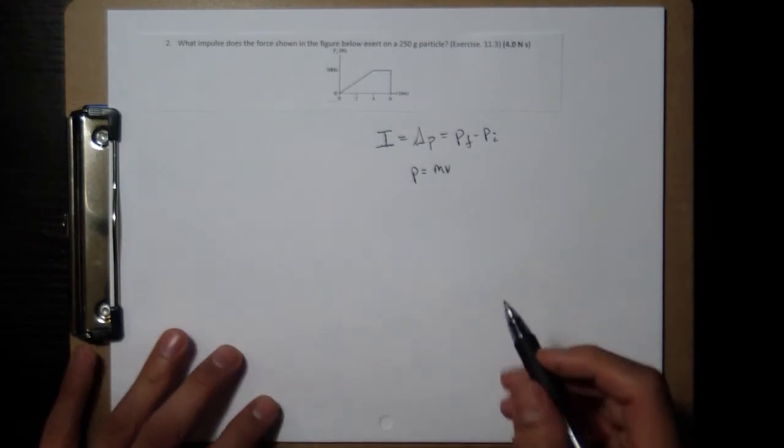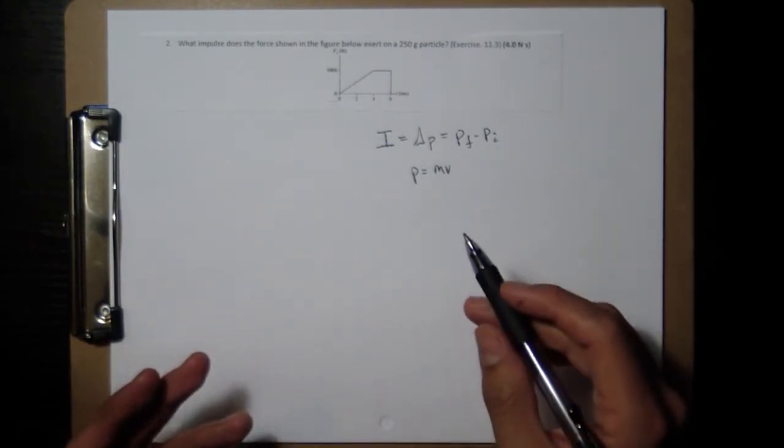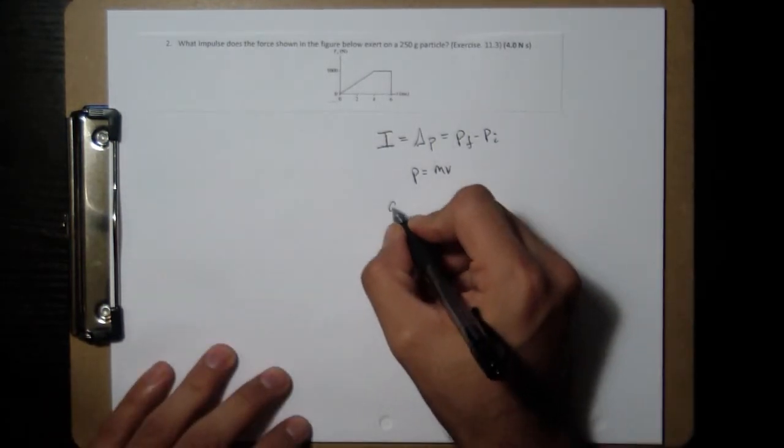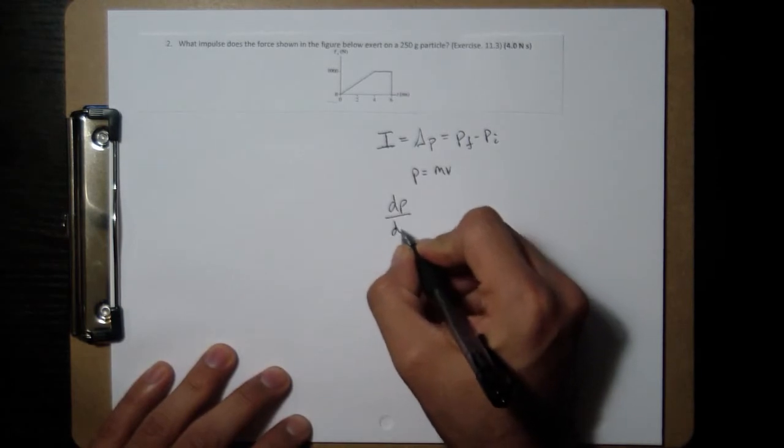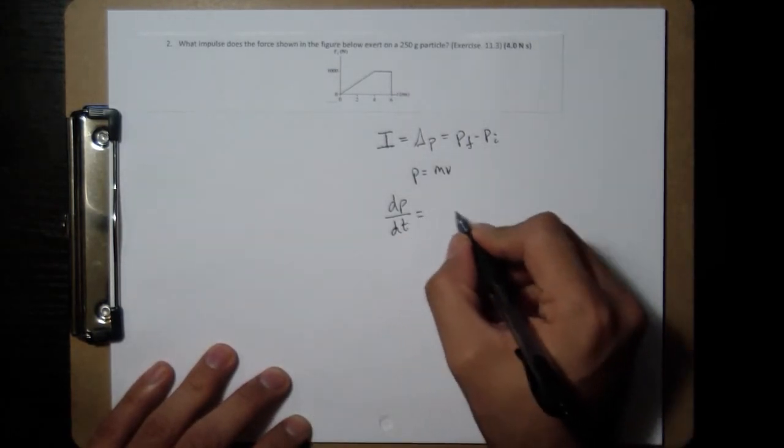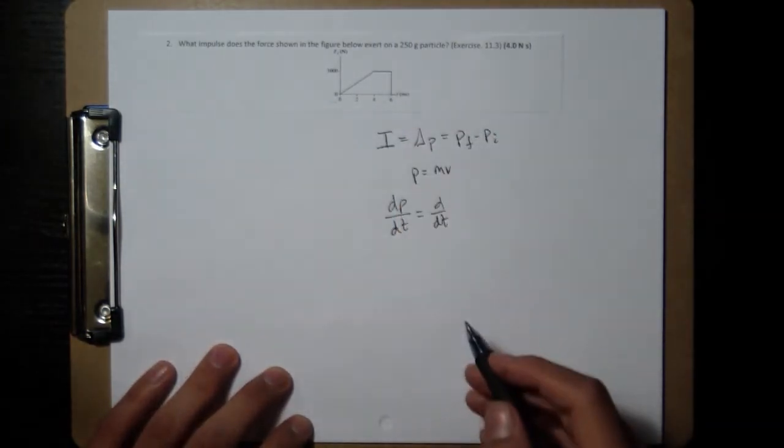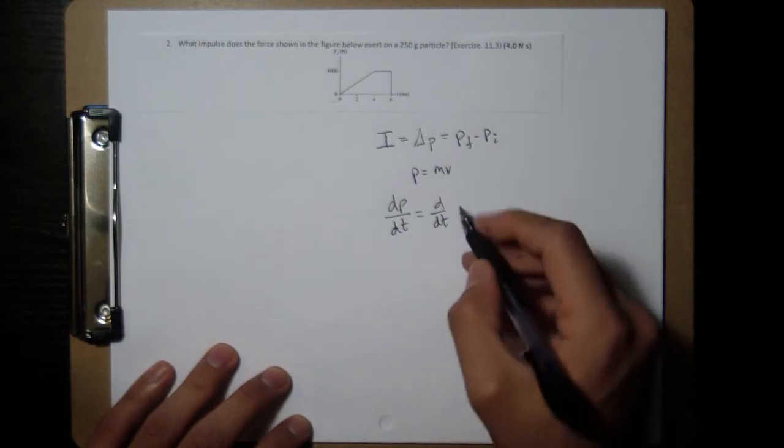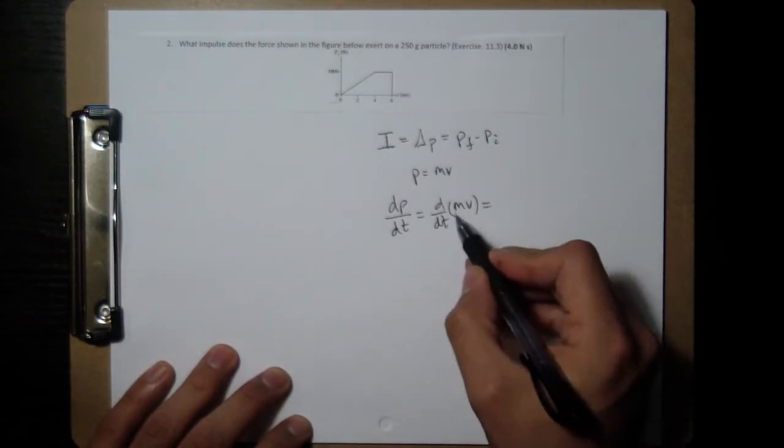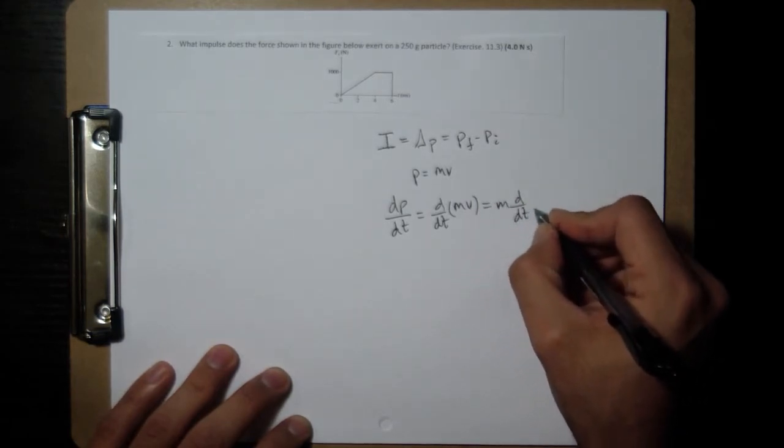But sometimes we can write impulse, or impulse in the moment is going to be the derivative of momentum. And so that ends up being related to force and time in this way. So if I take the derivative of momentum, I'm going to take the derivative of mass times velocity. If I have a constant mass, then I can pull that out of the derivative, d dt.